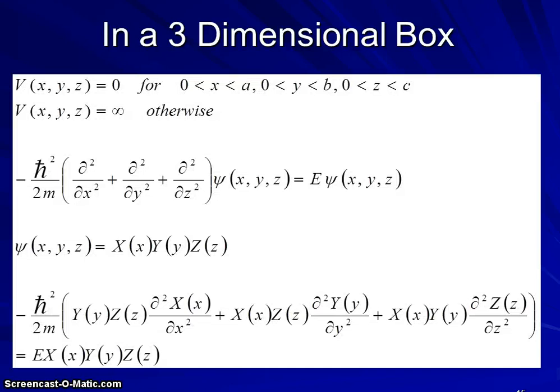Now we can apply the same mathematics that we just used on a one-dimensional box to a three-dimensional box where the particle has potential energy zero anywhere where x is between zero and a, y is between zero and b, and z is between zero and c - some three-dimensional box that may or may not be cubic or oblong. Then our Hamiltonian would have second derivatives in three dimensions, and our particle's wave function would have coordinates in three dimensions.